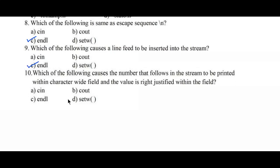Question number 10: which of the following causes the number that follows in the stream to be printed within a character-wide field, with the value right-justified within the field? Options: A: cin, B: cout, C: endl, D: setw. Here, D — setw — is the right answer.